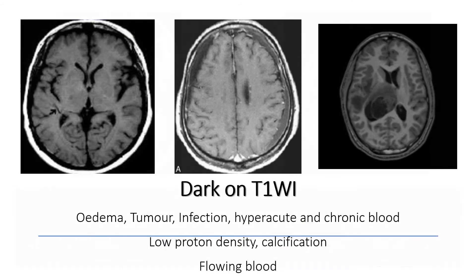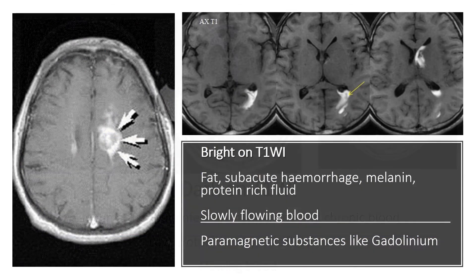Dark on T1: edema, tumor, infection, hyperacute and chronic blood, low proton density, and calcification. Flowing blood also appears dark. Bright on T1: fat, subacute hemorrhage, melanin, protein-rich fluid, slowly flowing blood, and paramagnetic substances like gadolinium.